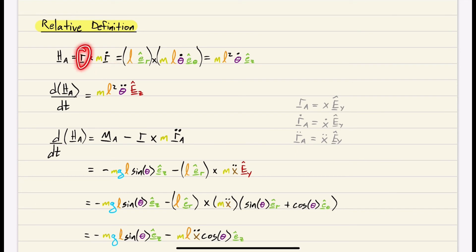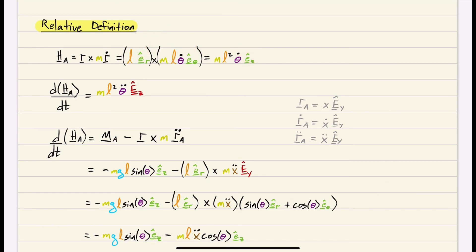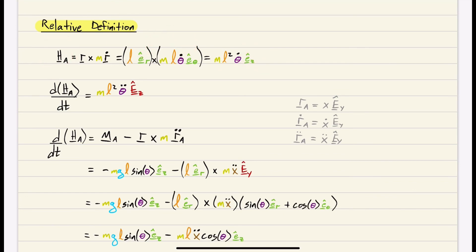Now the relative definition. H_A = r × m*r_dot. We already know r = L*ER and r_dot = L*theta_dot*E-theta. Since ER × E-theta = EZ, we get H_A = mL²*theta_dot*EZ.